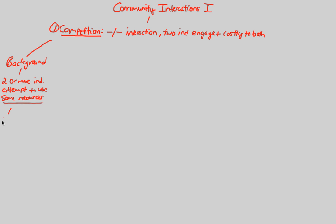Competition can furthermore be either intraspecific or interspecific — two opposites. Intraspecific means it's occurring within a species, while interspecific means it's occurring between species. We can write that down simply: intraspecific is within one species, and interspecific is between several species.